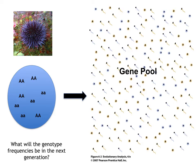We can estimate the allele frequencies for the next generation by randomly reaching into that gene pool and pulling out gametes one at a time — ignoring male versus female. If I pull out big A then little a, that gives a big A little a zygote; if I pull out little a then another little a, that's a little a little a. With so many gametes we don't need to sample with replacement. Doing this repeatedly, we create a population for the next generation.